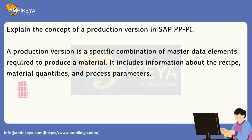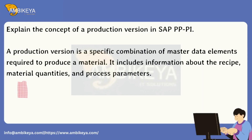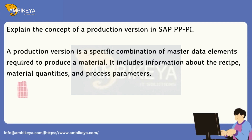Explain the concept of a production version in SAP PP-PI. A production version is a specific combination of master data elements required to produce a material. It includes information about the recipe, material quantities, and process parameters.